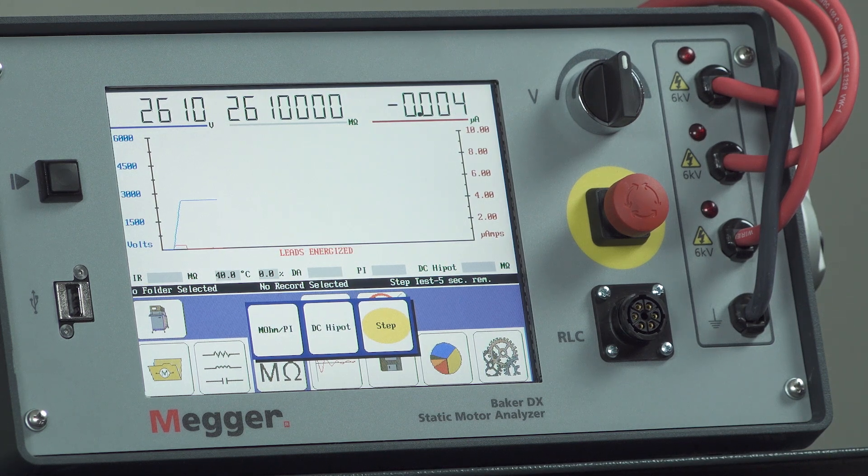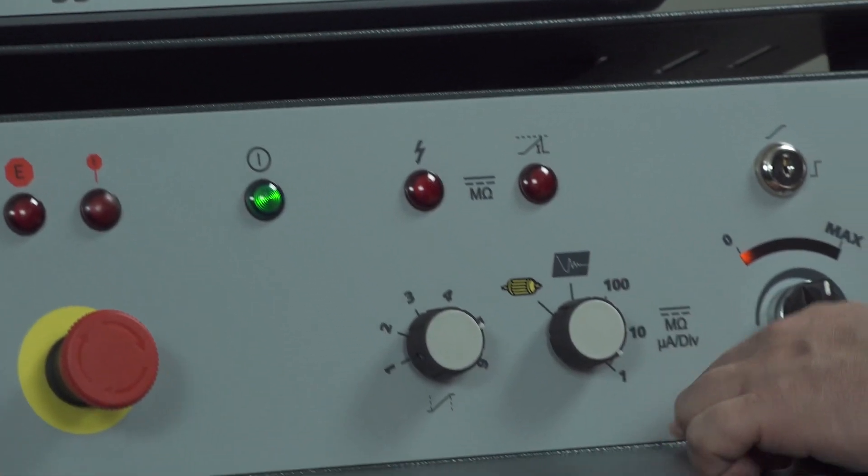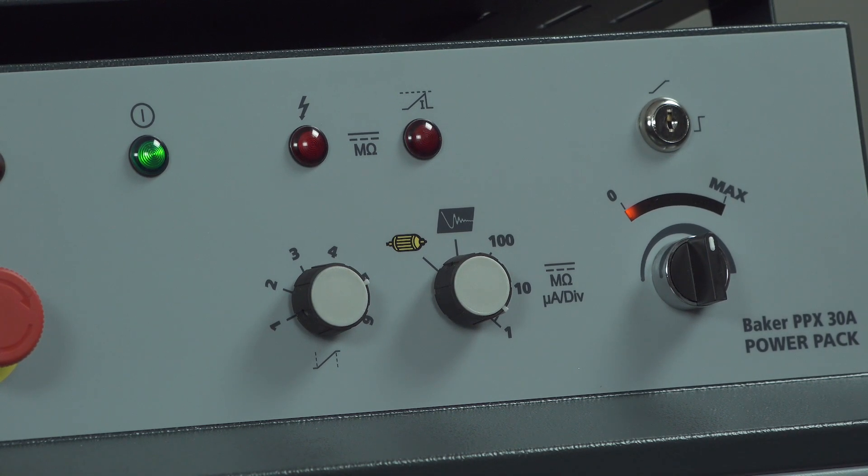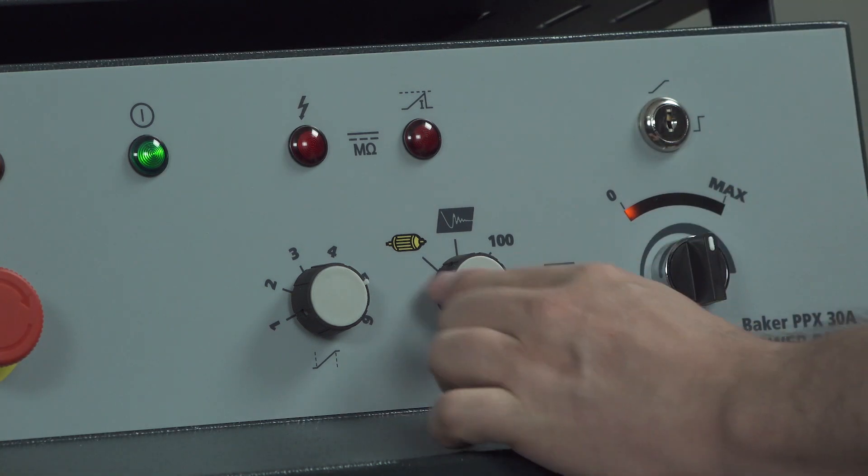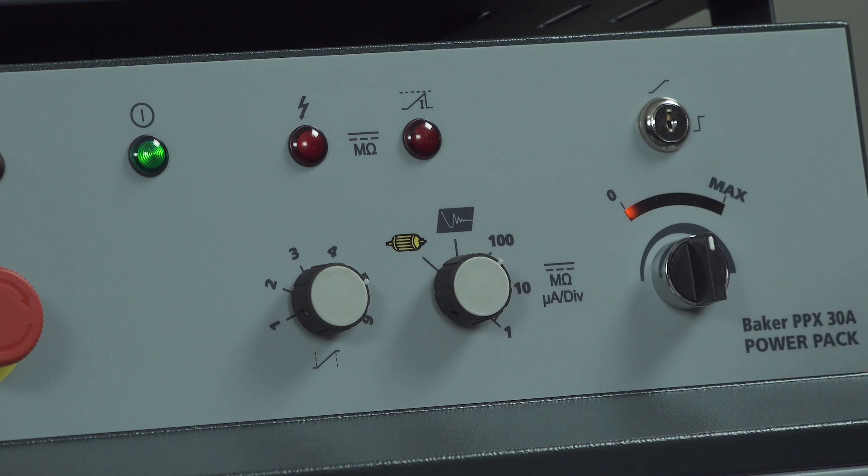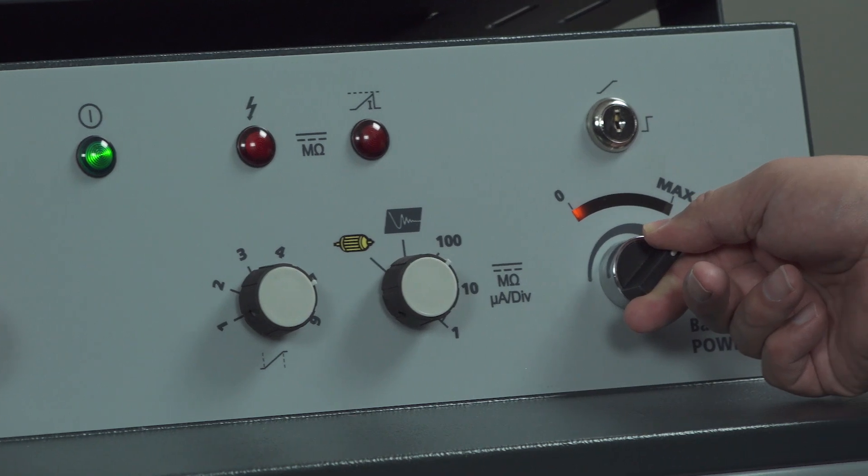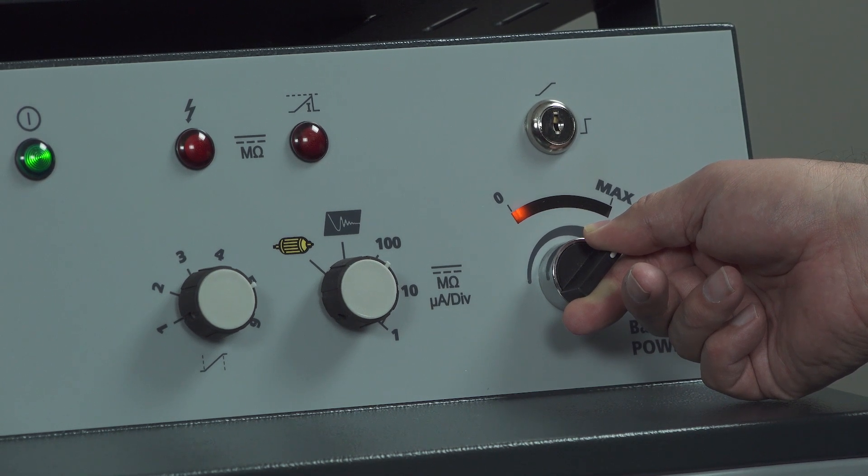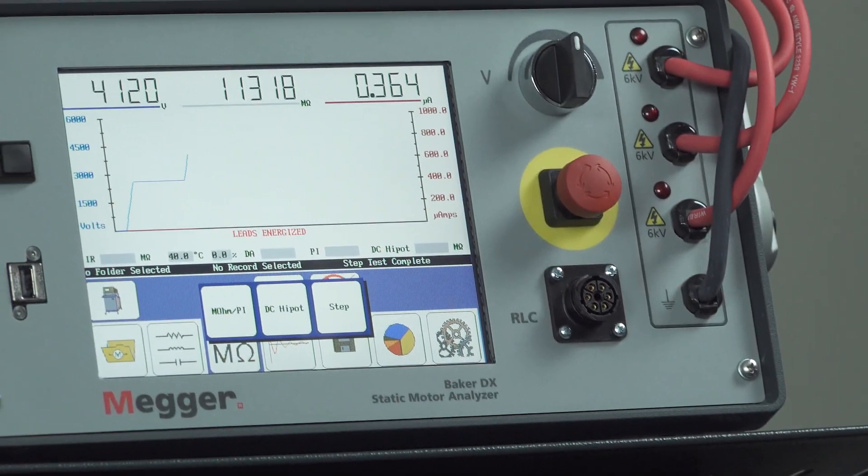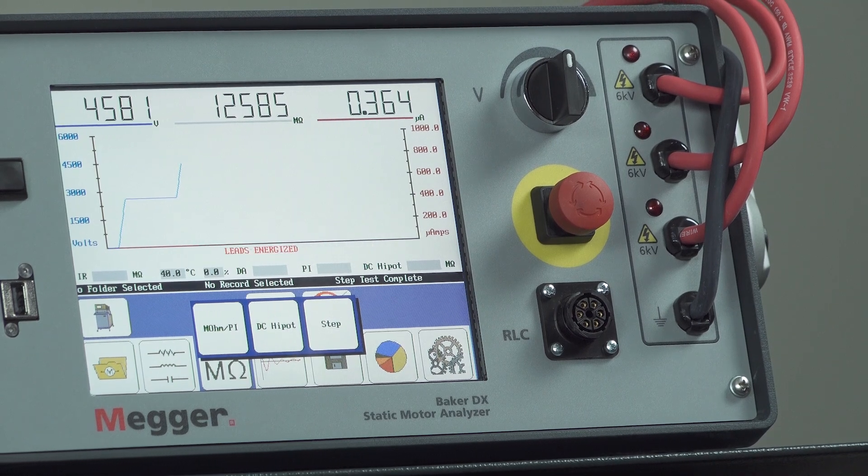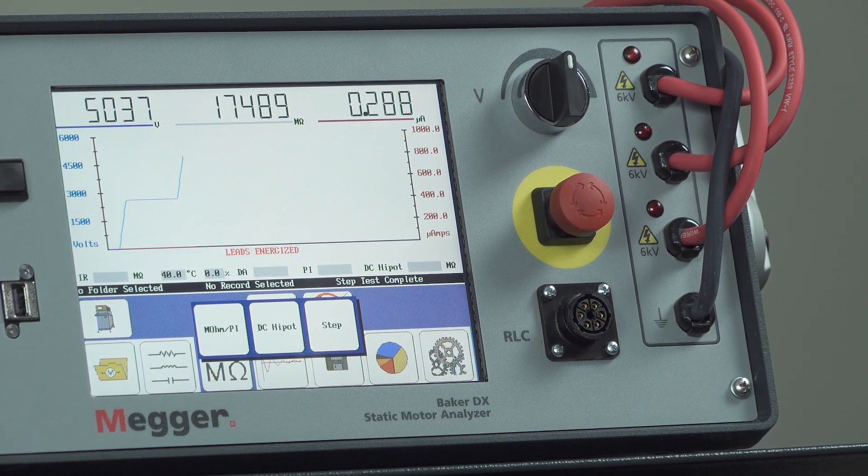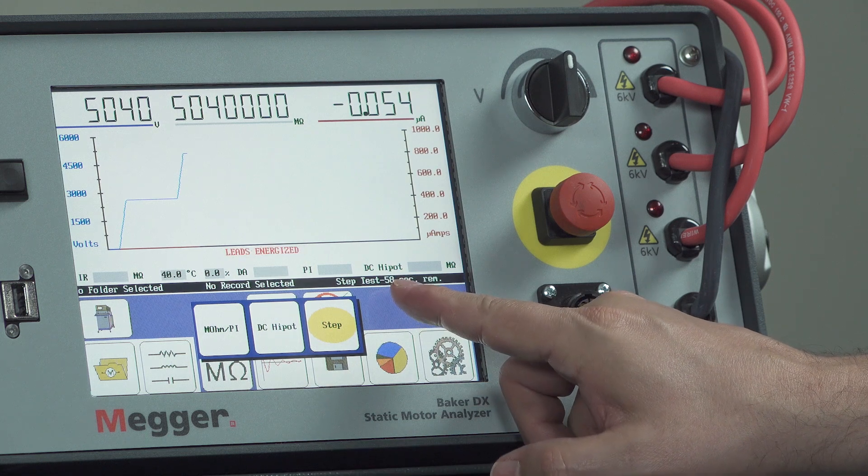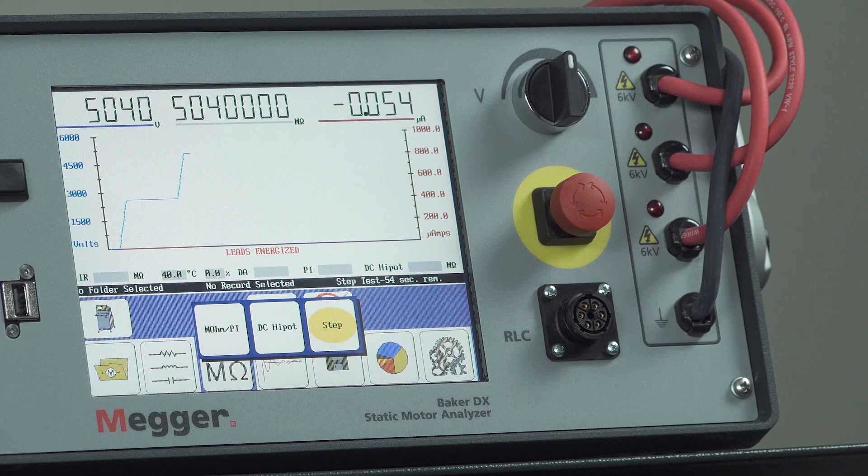Once the step time goes down to zero, it's going to say step test complete. We're going to make sure we take this function selector switch back to the 100 microamp per division setting, because these positions actually define the trip level of current. While we're ramping, the current level will be much higher during the ramping cycles. So it says step test complete. Take the function selector switch to the 100 microamp per division setting, and we'll use the voltage control knob to ramp to the next step, which will be 5,000. Now we're at 5,000. I want to hit the step button again. That tells the tester we're at a new step and we need a new timer. You'll see that timer up there on the right again.